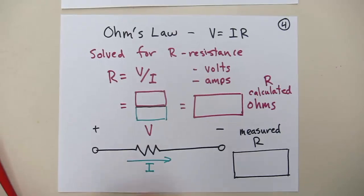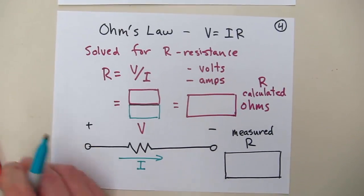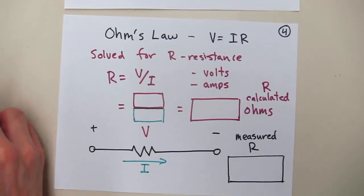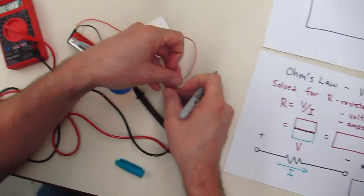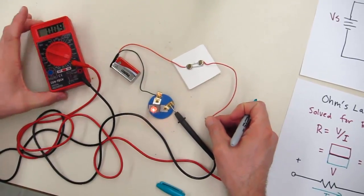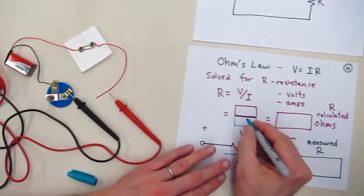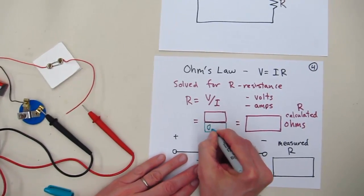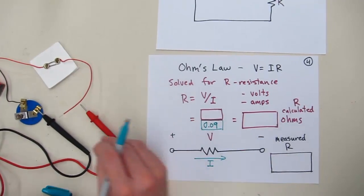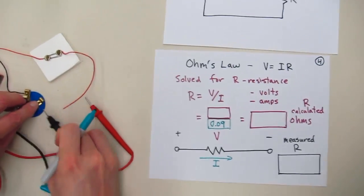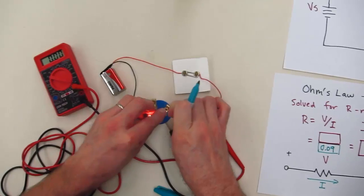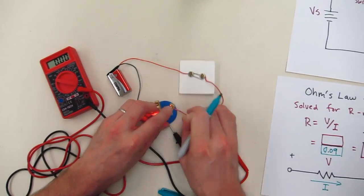Now, so we took one measurement here on the voltage. Let's do the current one while we've got it already set up. Again, the circuit's closed. I'm measuring the current, and we had 0.09 amps. All right, so that's the denominator, 0.09. And I'm going to hook the circuit back together.